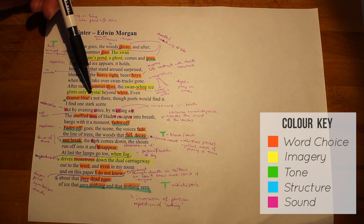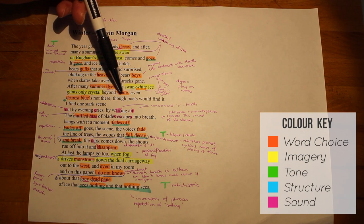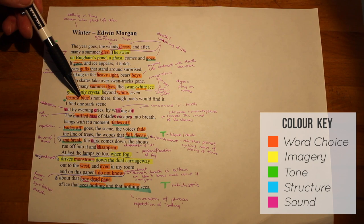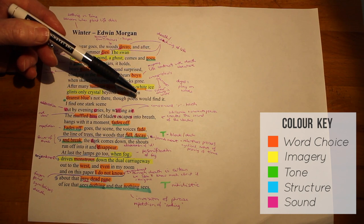He says that the colour that perhaps would represent positivity, dearest blue, is not in sight, although he qualifies that a poet might find it because they have imagination.